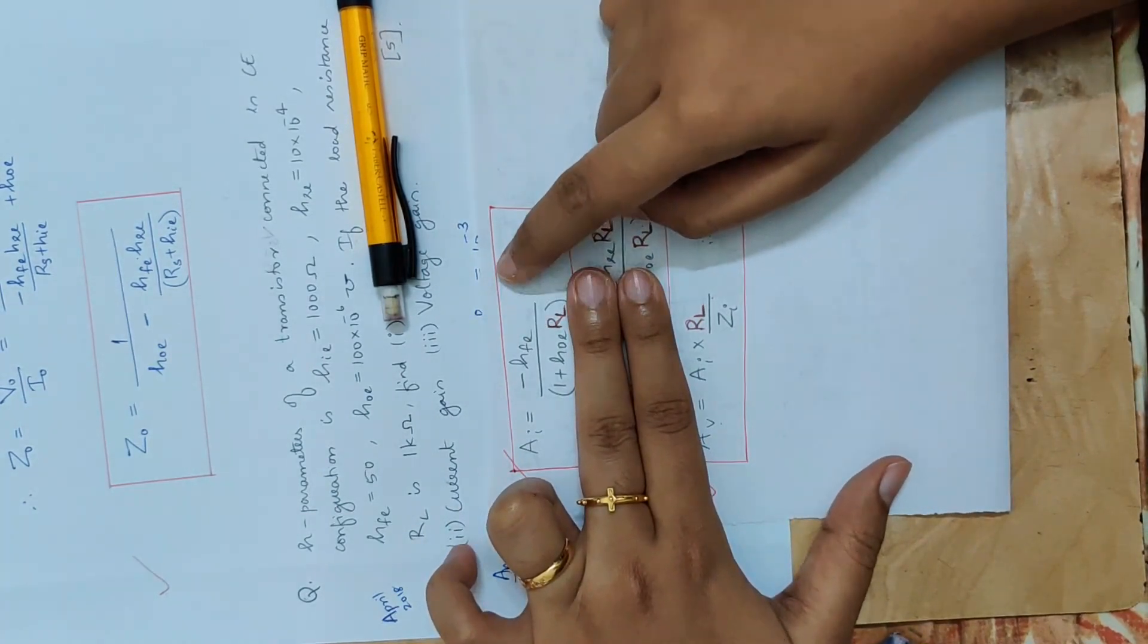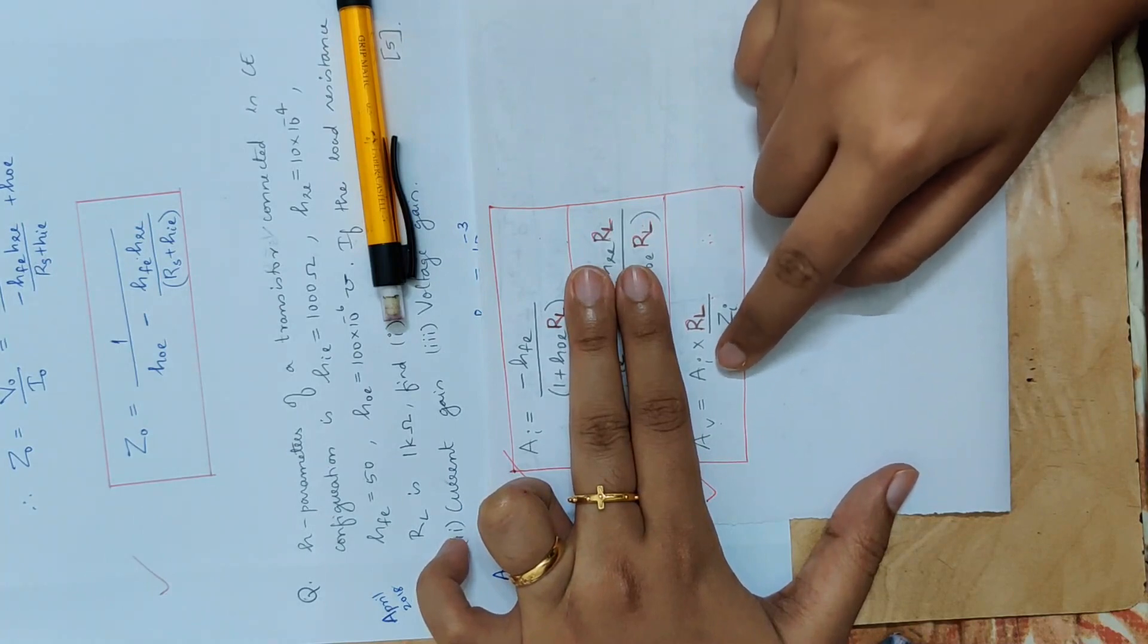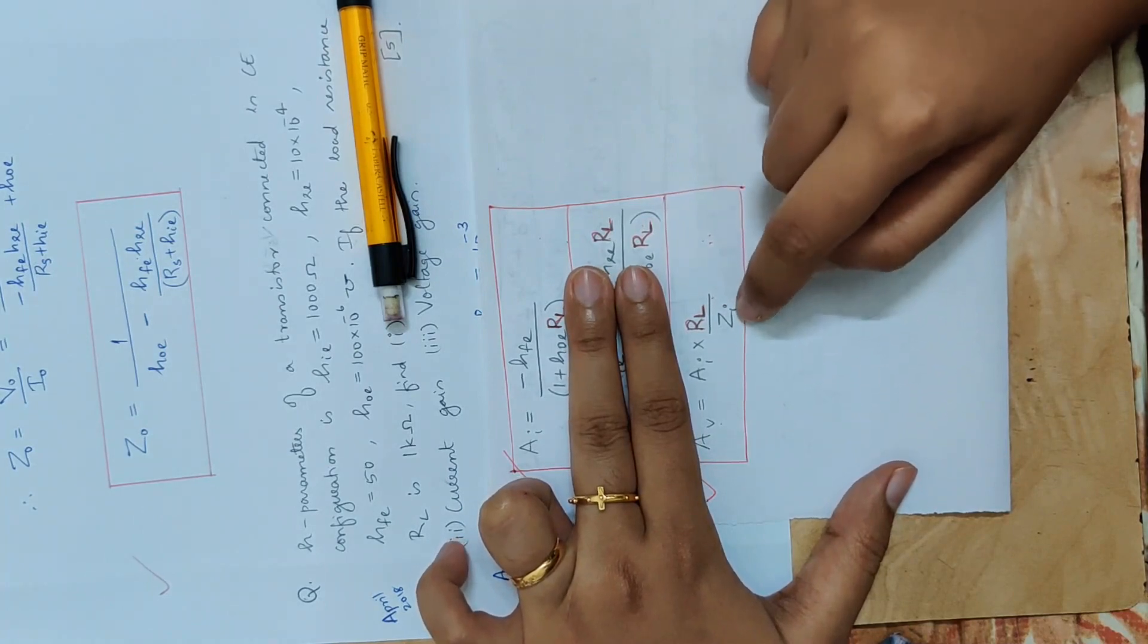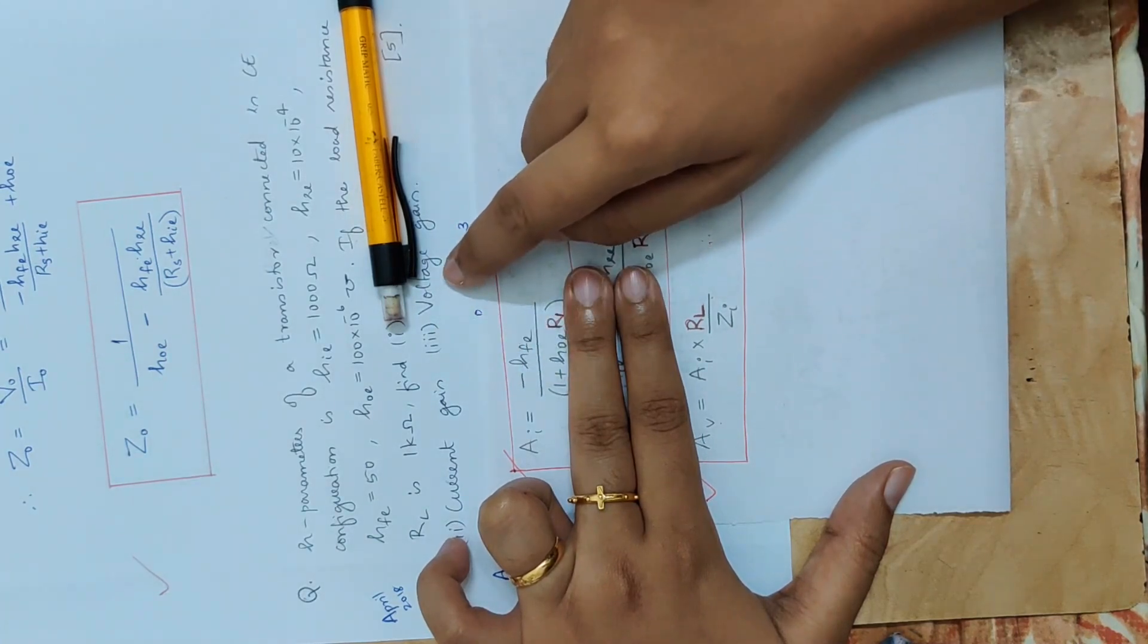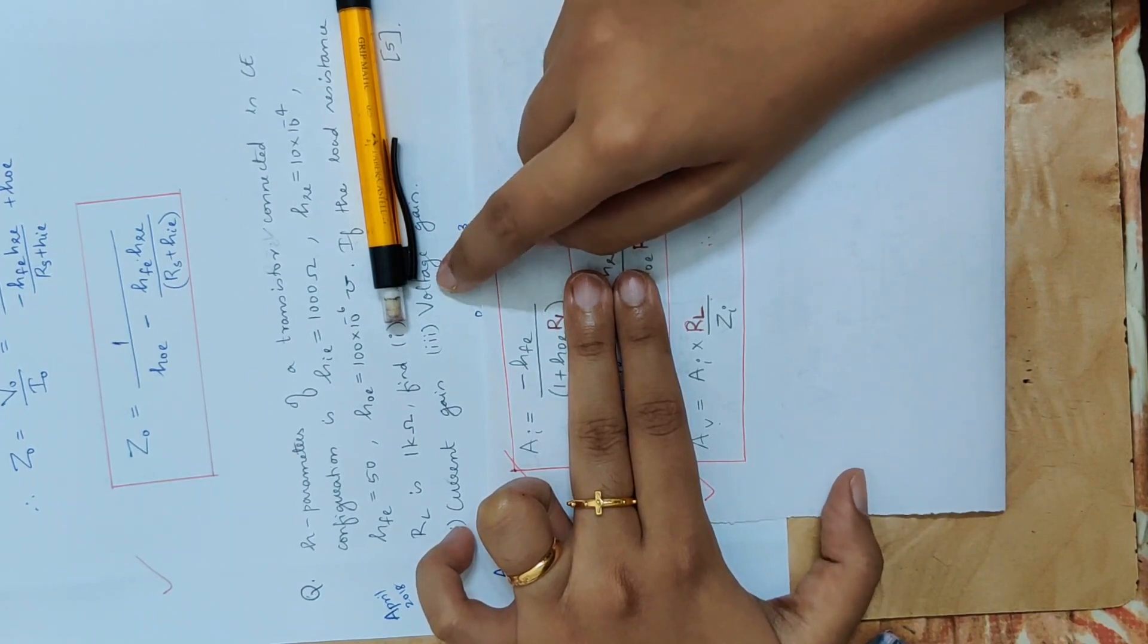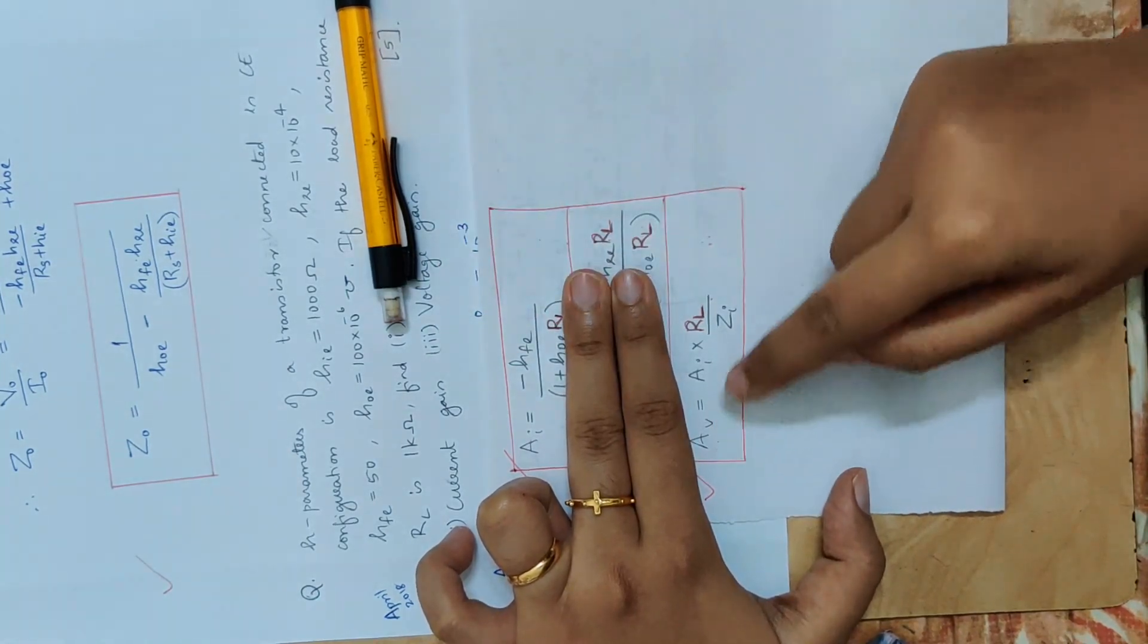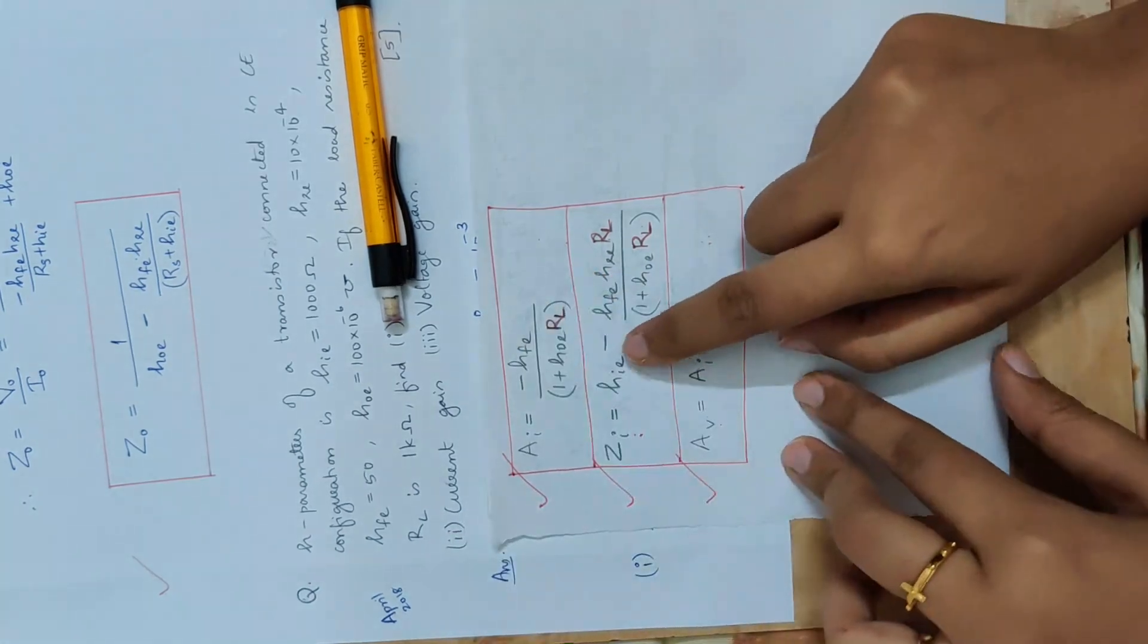Now we have a equation. AI is equal to equation. Now we have voltage gain and input impedance. Current gain into RL by input impedance. Now we have current gain and voltage gain. Input impedance, we have not asked the question about input impedance. In this equation, we have input impedance in voltage gain. Now we substitute the ZI equation.